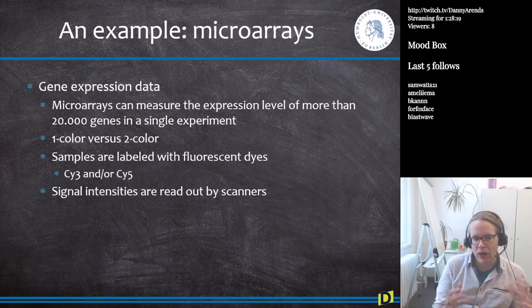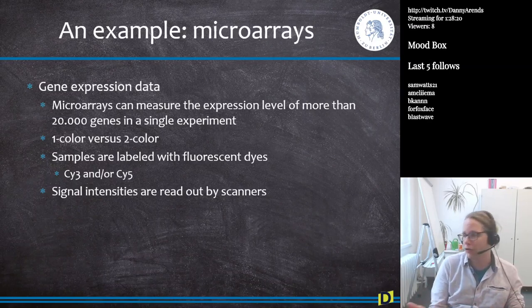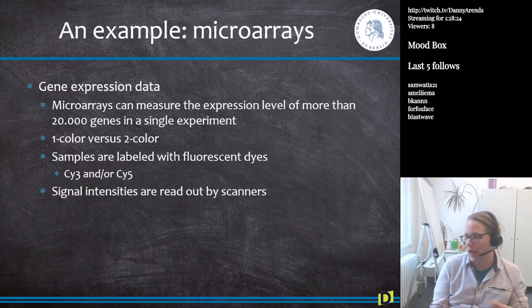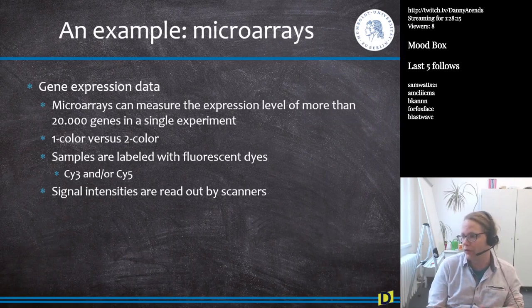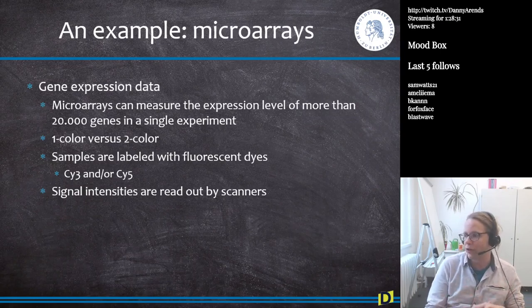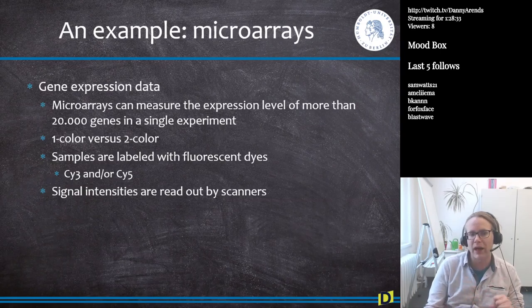So how does this work? We use a fluorescent dye — Cy3 and/or Cy5 — depending on whether you have a one- or two-color microarray. The intensity of the dye is then read out by a scanner.